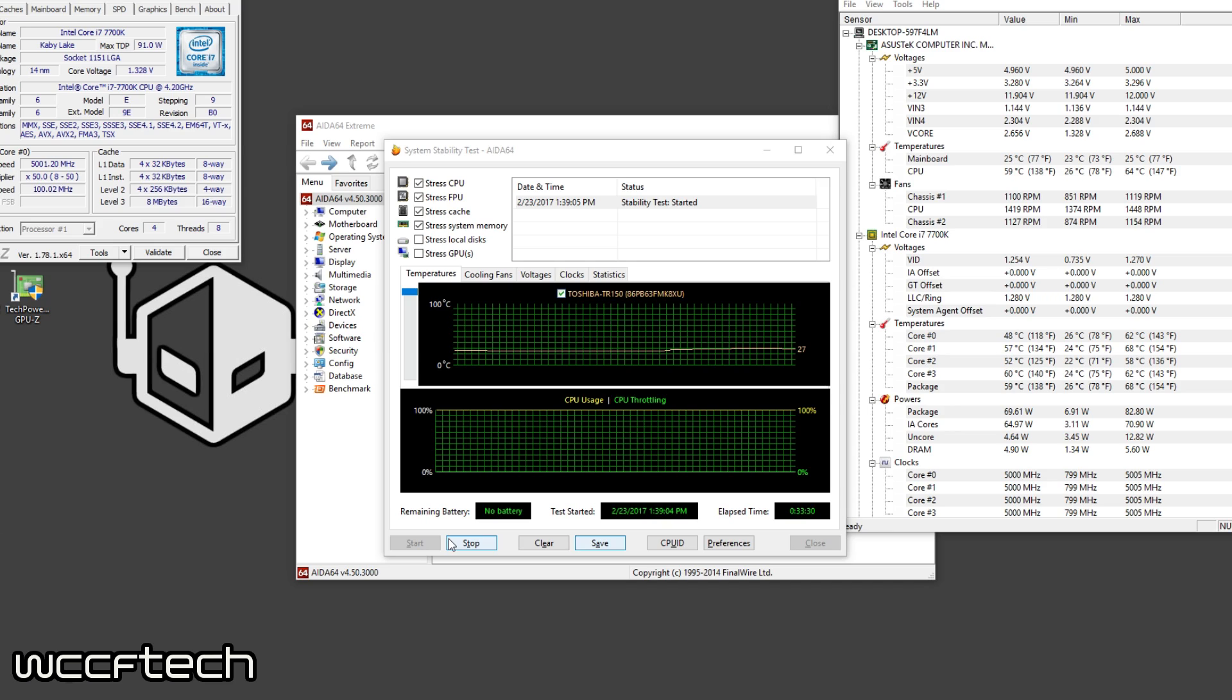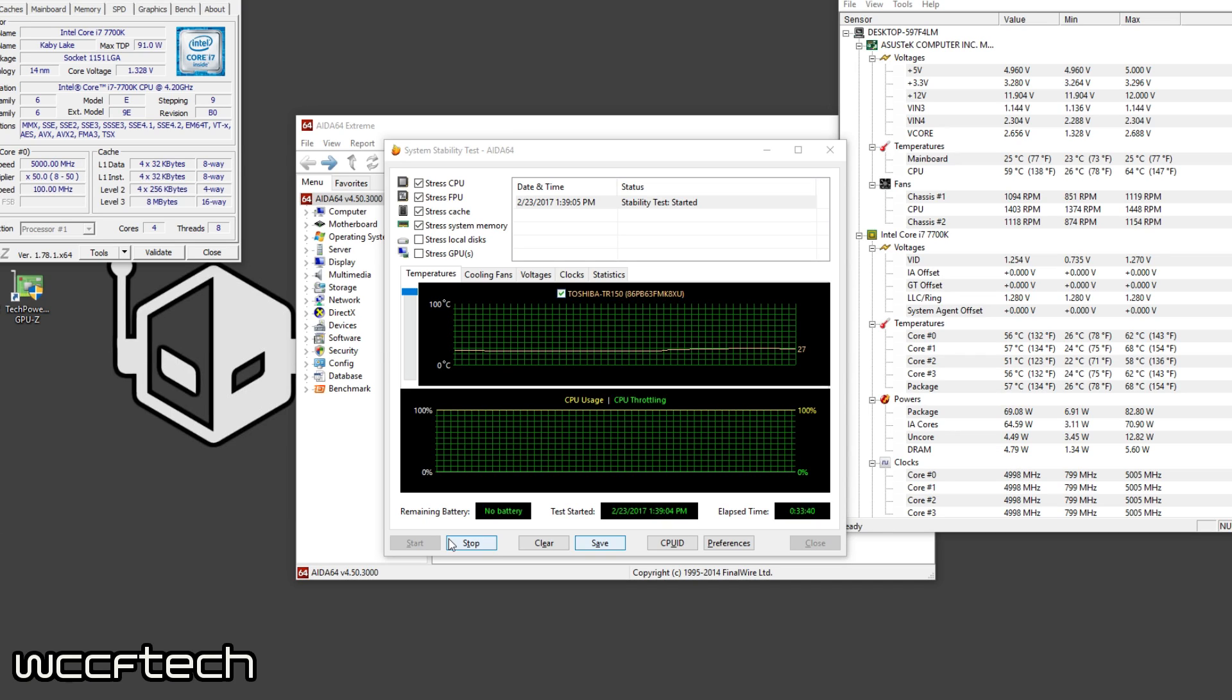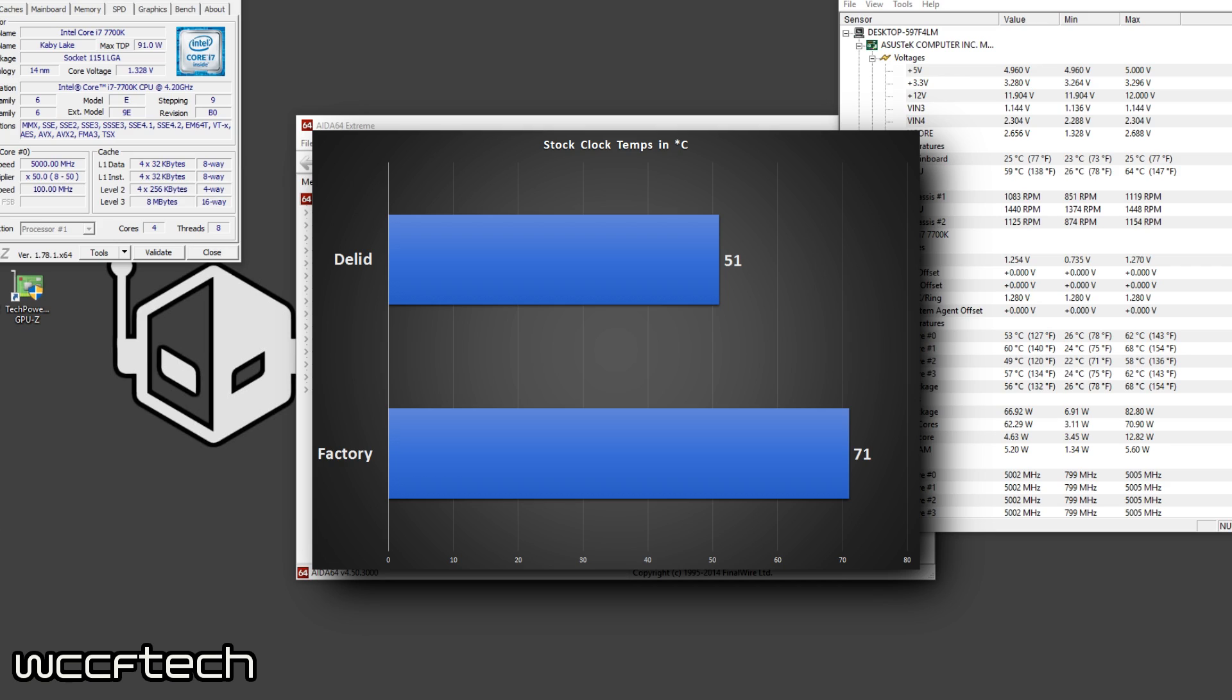Now on screen we have it recording while running at 5 gigahertz at 1.35 volts with LLC calibration set to level 5 which leaves us a constant voltage of 1.328 volts. Now first what we're going to look at while this is on screen, we're going to talk about stock. I did do stock just to see how things performed at stock with auto voltage and everything.